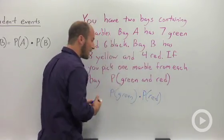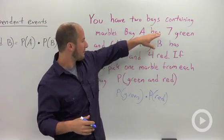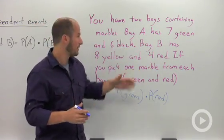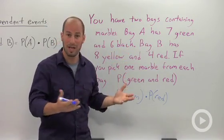I should back up a second and just point out that no colors are duplicated. So therefore, it's not like we have to worry about having the green from A or B. There's really no overlap potential. Bag A has green and black. Bag B has yellow and red. There's no overlap going on.